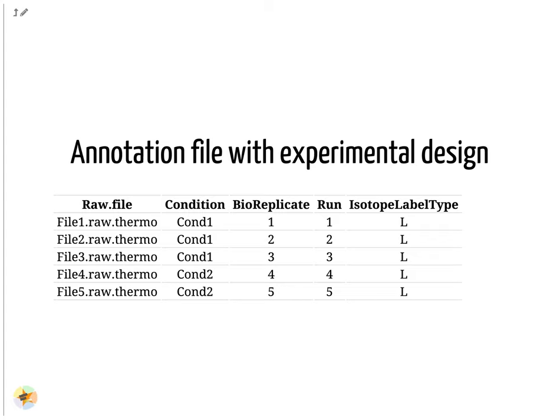In addition to the results of the proteomics software, an annotation file is needed as input. In this file, the experimental design is described — it specifies conditions and biological and technical replicates. In case MaxQuant results are used as MSstats input, an additional column with the label type is needed. In a DDA experiment, the value is L for all conditions.